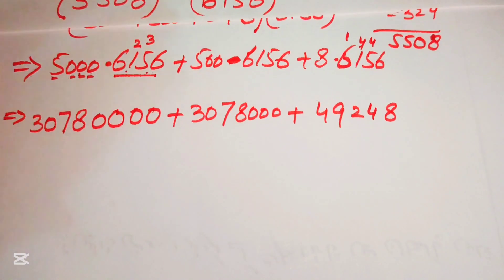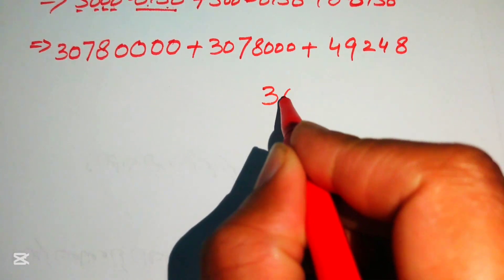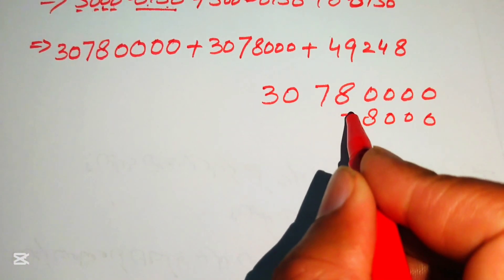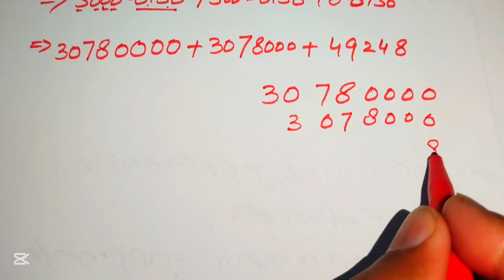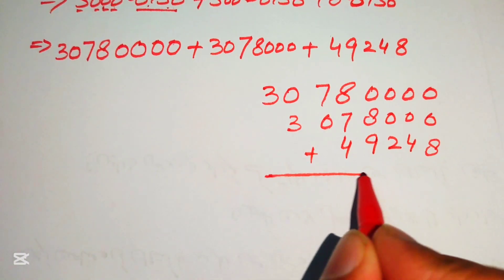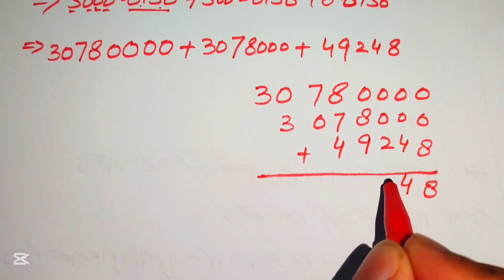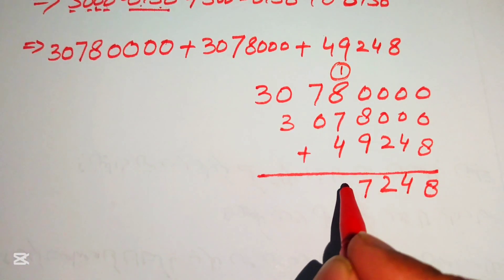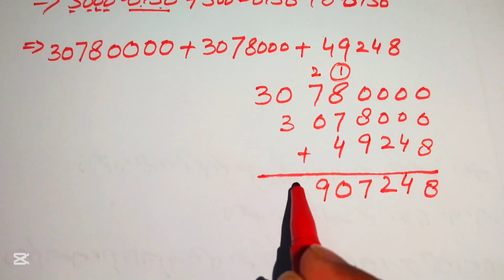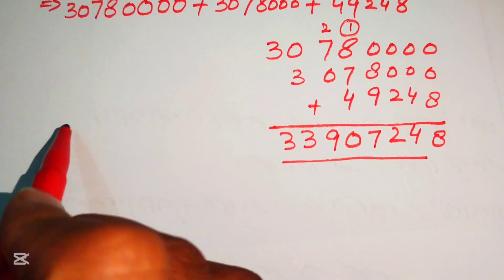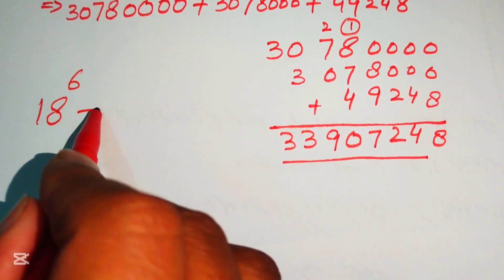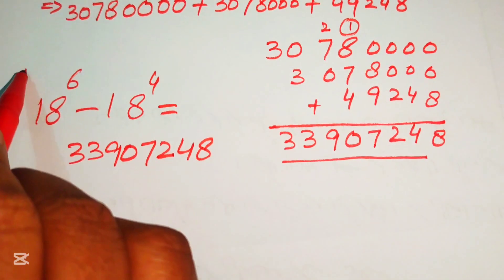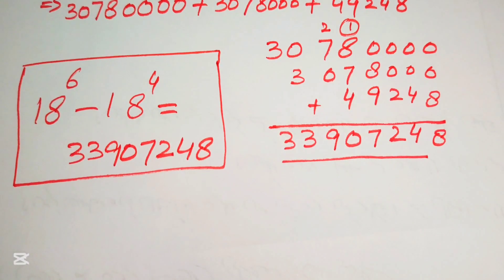Now we sum all partial products using traditional addition: 30,780,000 plus 3,078,000 plus 49,248. Adding column by column — 8; 4 plus 8 is 12... working through: we get the final answer. 18 to the power of 6 minus 18 to the power of 4 equals 3,390,724,8 — the final answer is 339,072,480. Thank you for watching this video; please subscribe to my channel for more exciting videos.